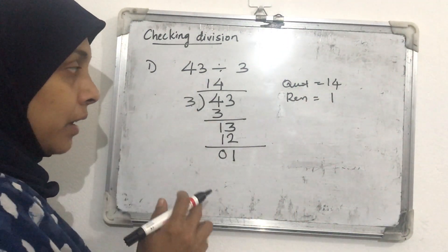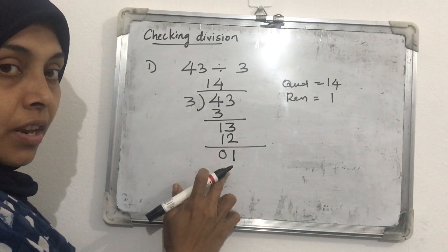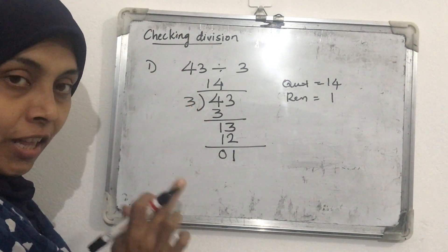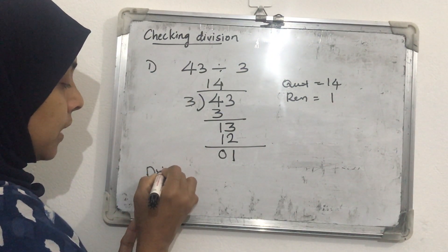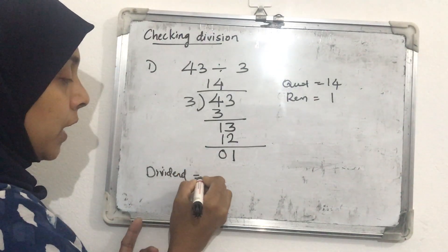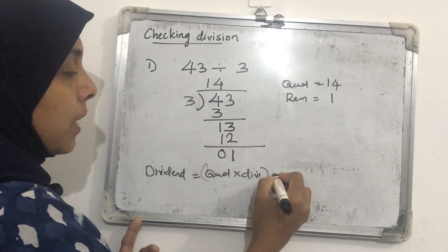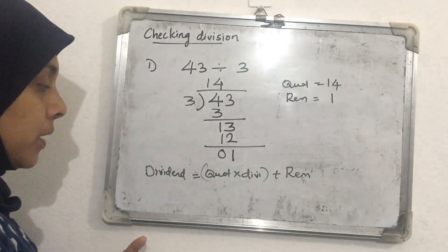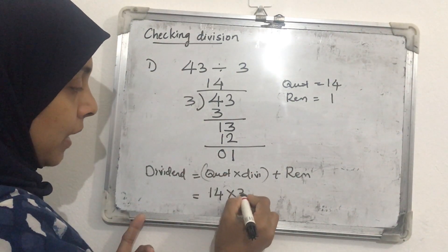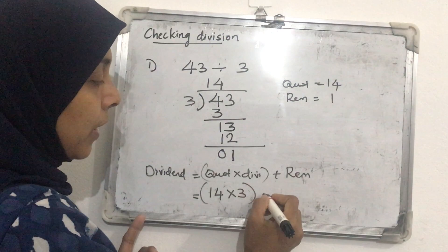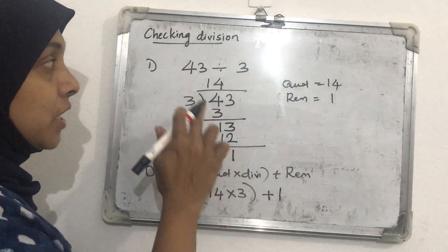Now we check our division. The formula is: Dividend = Quotient × Divisor + Remainder. The quotient is 14, the divisor is 3, and the remainder is 1. After multiplying 14 by 3 and then adding remainder 1, we want to get 43. Only then is our division correct.